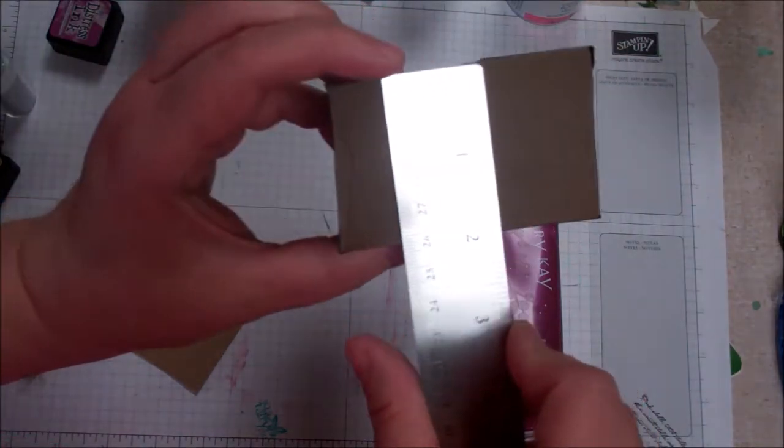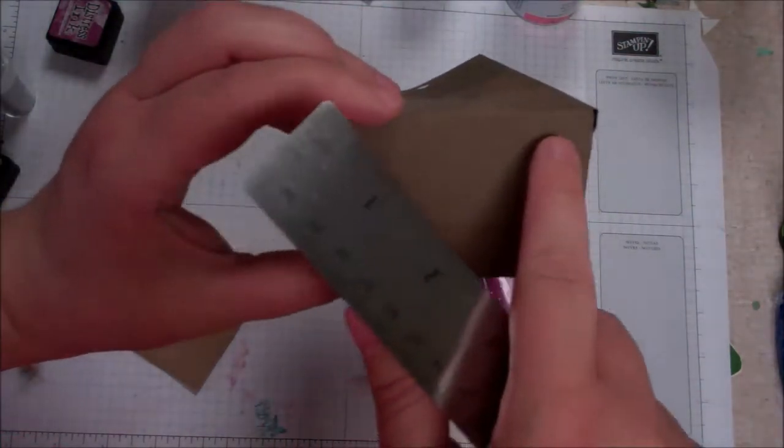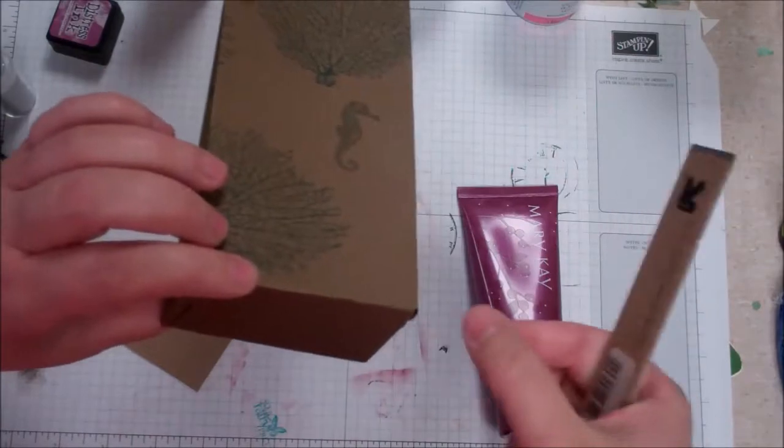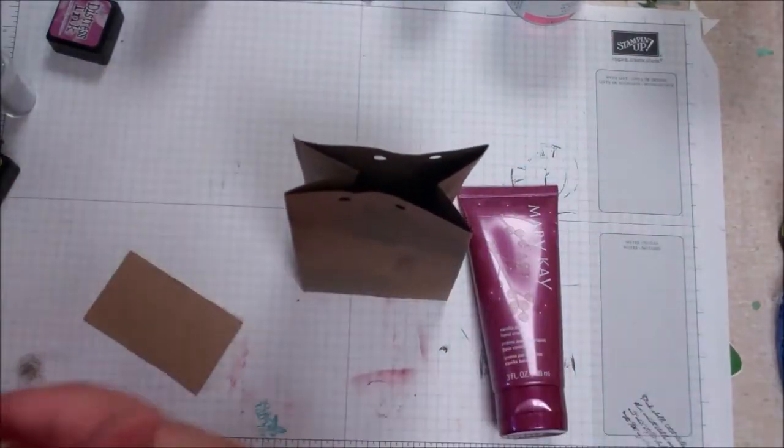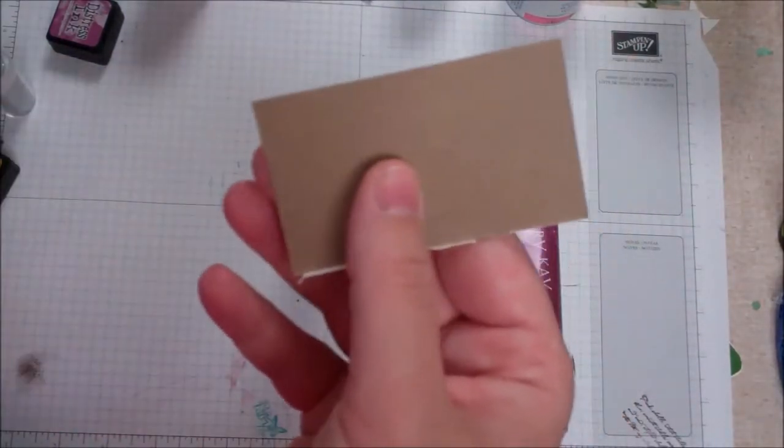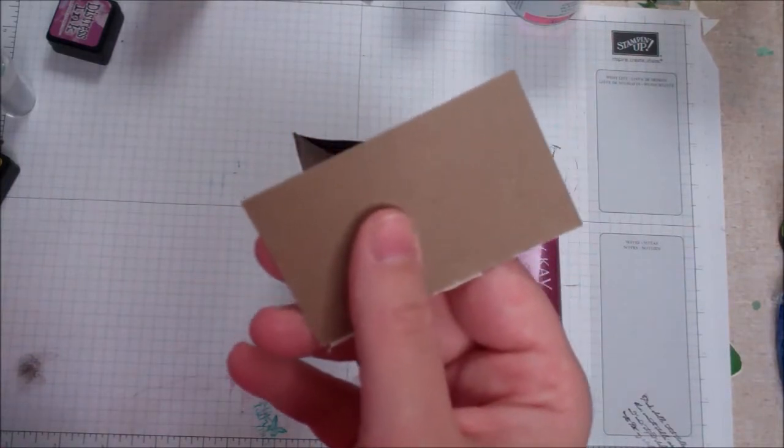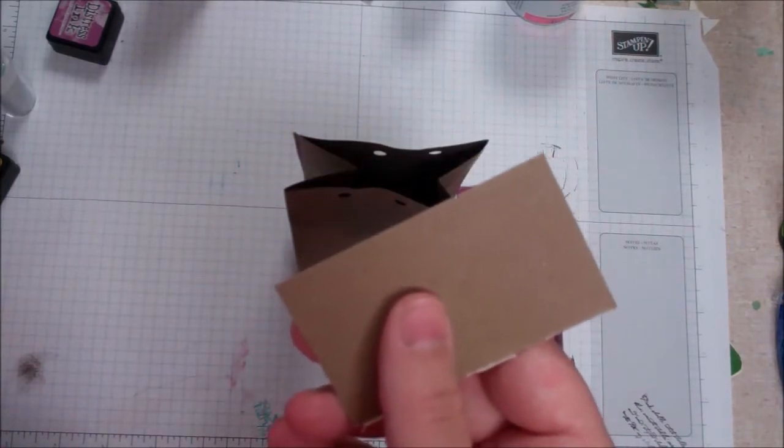Because we want to go just under what the measurement is so that we clear the sides here and don't make it stick out in a funny way. So measure the bottom of the box and cut a piece of chipboard to that measurement.